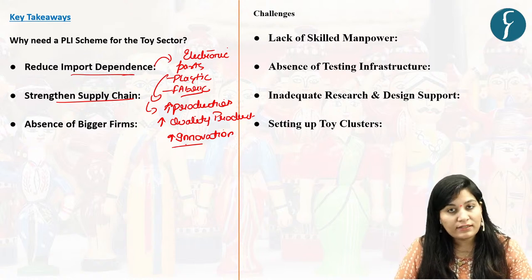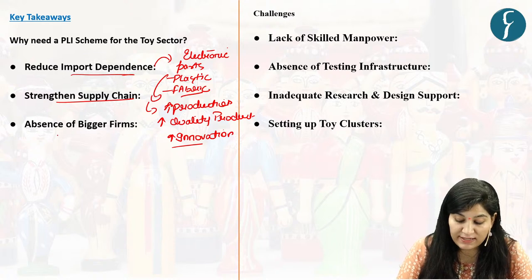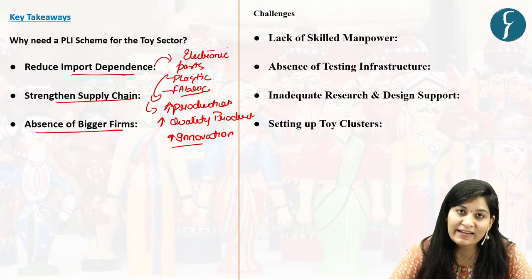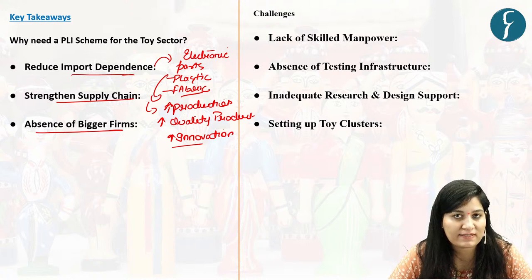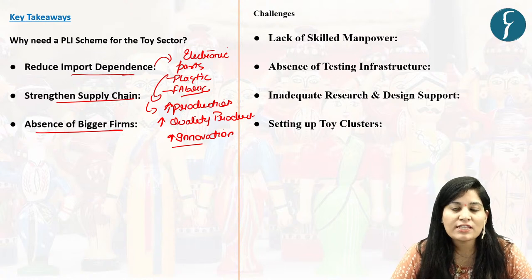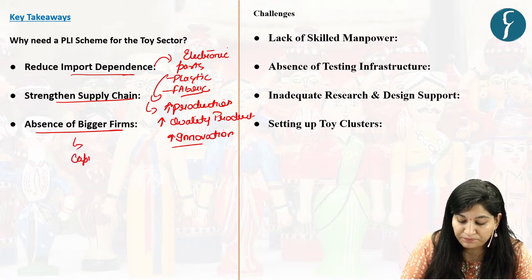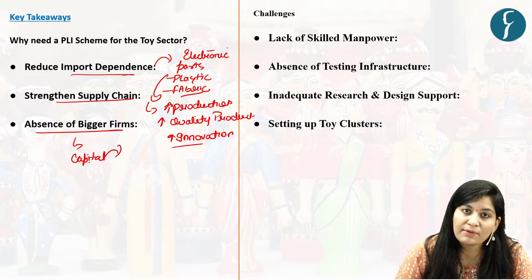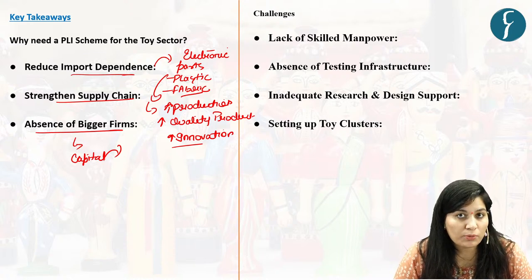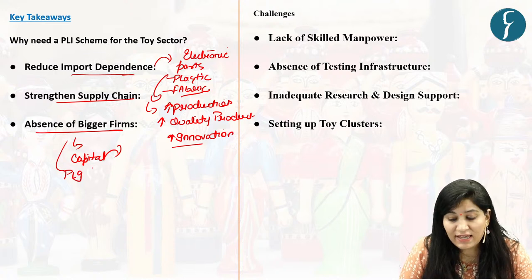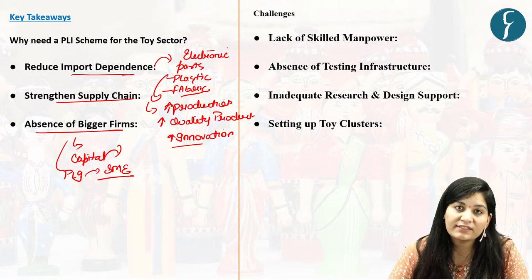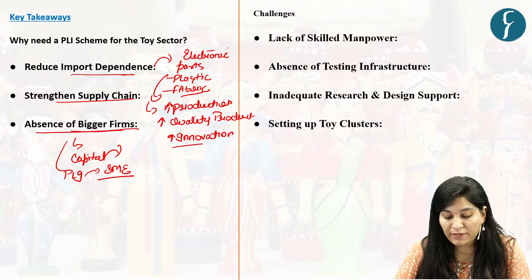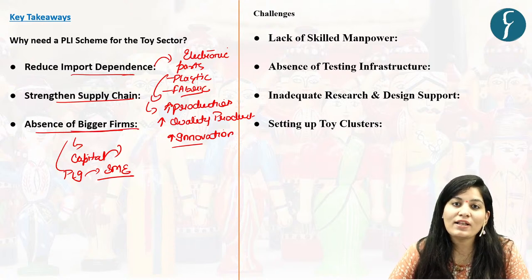Another need for PLI scheme for the toy sector is the absence of bigger firms. The toy market in India is quite fragmented, composed mainly of small and medium-sized enterprises. These firms often lack the capital needed to scale up production or bring more competitive products to the global market. With PLI, it can support these small and medium-sized enterprises so that they can scale up their production and bring out more competitive products in the market.